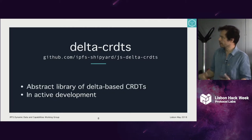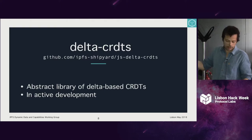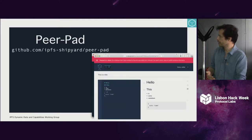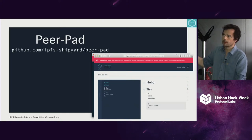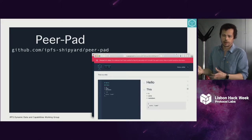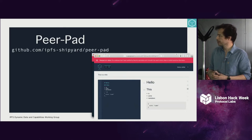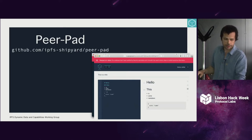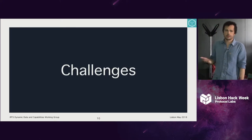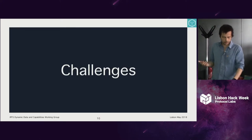There's an implementation of Delta CRDTs. All of these are listed on the Dynamic Data and Capabilities Working Group website if you want to check it out. Juan mentioned PeerPad — this is one of the products that we aim to create more of, to test all the things that we are building underneath. PeerPad is the first. And as an engineer, I have a bunch of challenges that I would like to share with you.